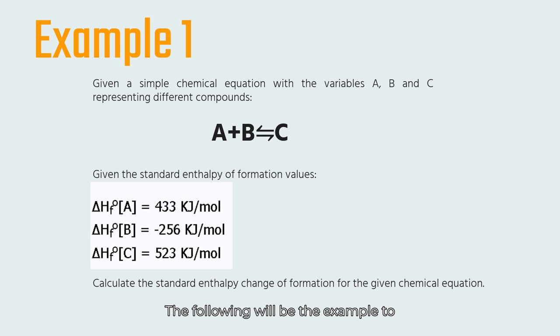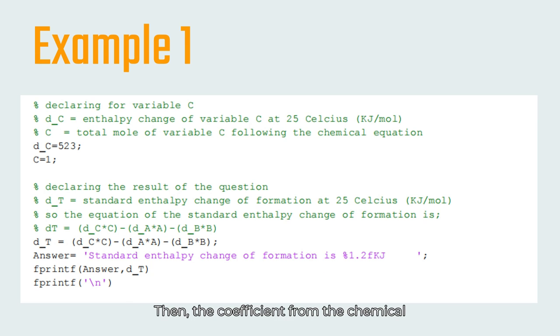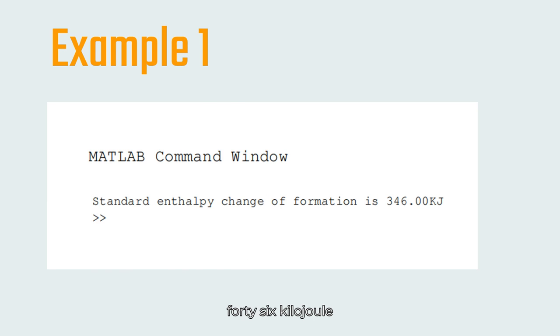The following will be the example to calculate the standard enthalpy change of formation for the given equation. First, we need to set the given value of standard enthalpy change of formation for each variable. Then the coefficient from the chemical equation also needs to be considered. Calculate the standard enthalpy change of formation by subtracting the total enthalpy change of variable C with enthalpy change of variables A and B, which is equal to 346 kilojoules.